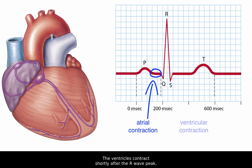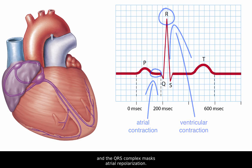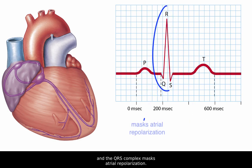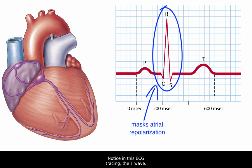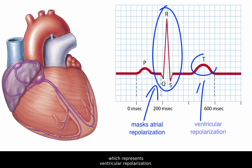The ventricles contract shortly after the R wave peak, and the QRS complex masks atrial repolarization. Notice in this ECG tracing the T wave, which represents ventricular repolarization.